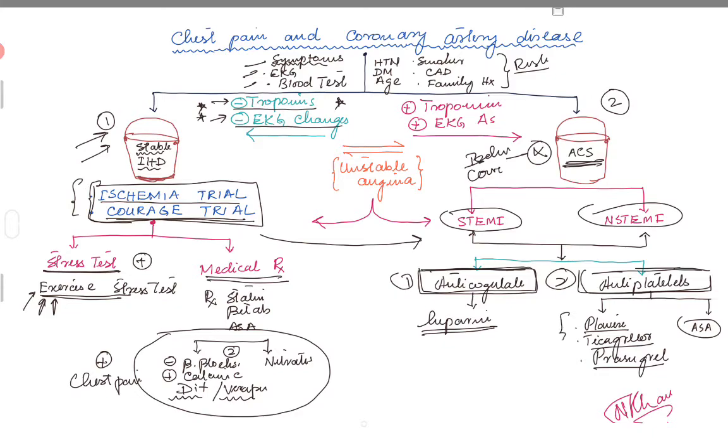Two of these P2Y12 inhibitors—the Plavix and the Brilinta—can be preloaded, meaning you can load them on the floor or in the ER, while Prasugrel is only loaded in the cath lab. Don't ask me why, but it was just because the trial that was designed to test Prasugrel only loaded patients in the cath lab once their anatomy was defined.